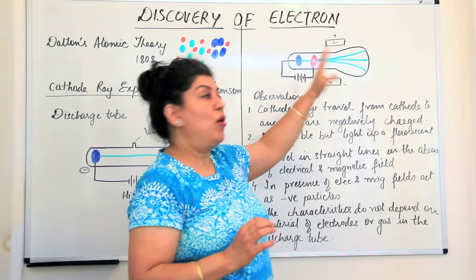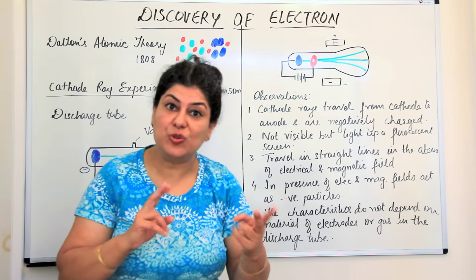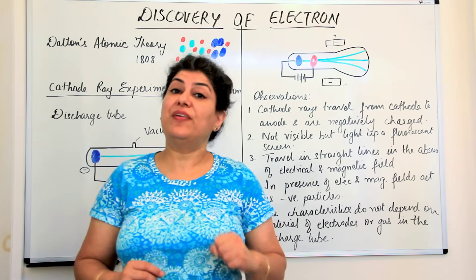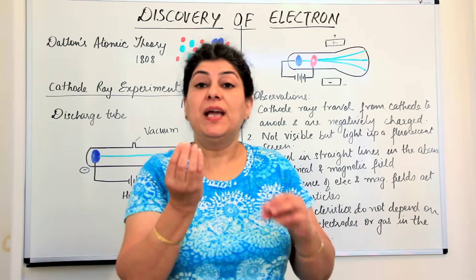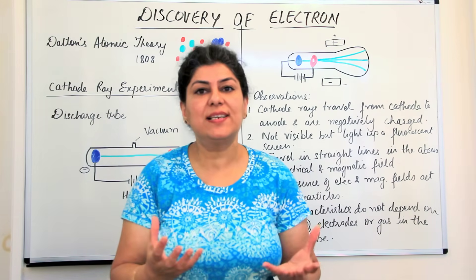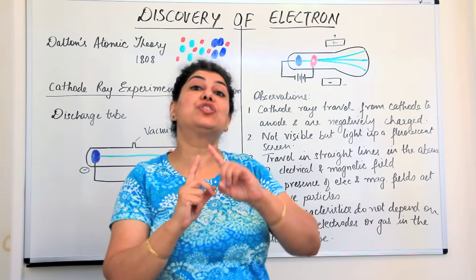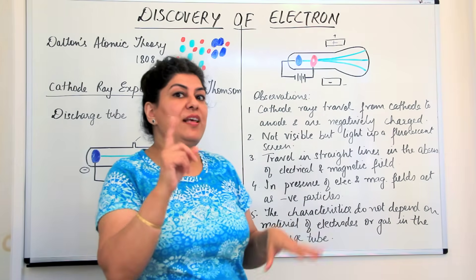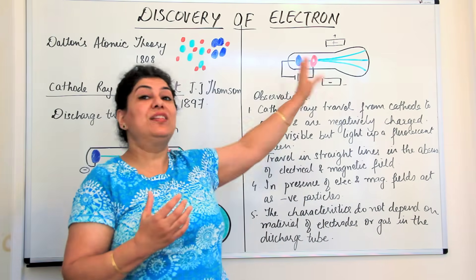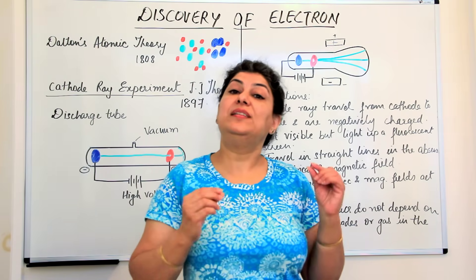Since he had swapped the metals and changed the gases and still got the same ray, he said that all matter must consist of this negatively charged particle. Through further experiments he found that the mass of this particle is about a thousand times less than the mass of hydrogen. Although scientists believed hydrogen was the smallest atom, this revealed that an atom consisted of something smaller than itself. Since he got the same results from different elements, he said all atoms consist of this negatively charged particle, and he called it the electron.